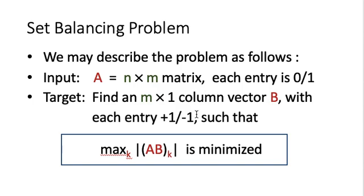Our target is to find a partitioning of the students. We use an m by 1 column vector B to represent the partitioning, where each entry is +1 or -1. Plus 1 means the student is partitioned into group 1, and minus 1 means they are in group 2. Our target is to compute the product AB, and we want the maximum absolute value of each entry of AB to be minimized. A positive entry means more students with skill k are in group 1; a negative entry means more are in group 2.